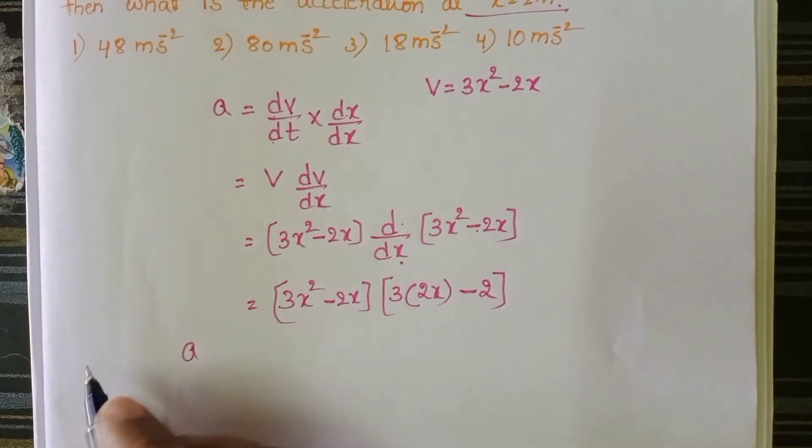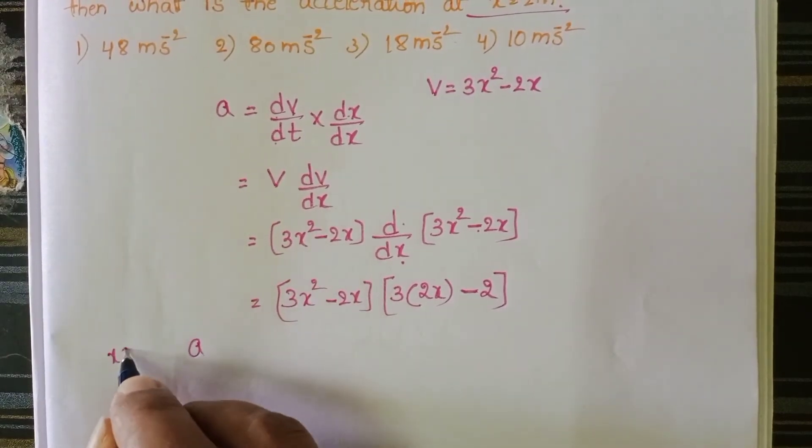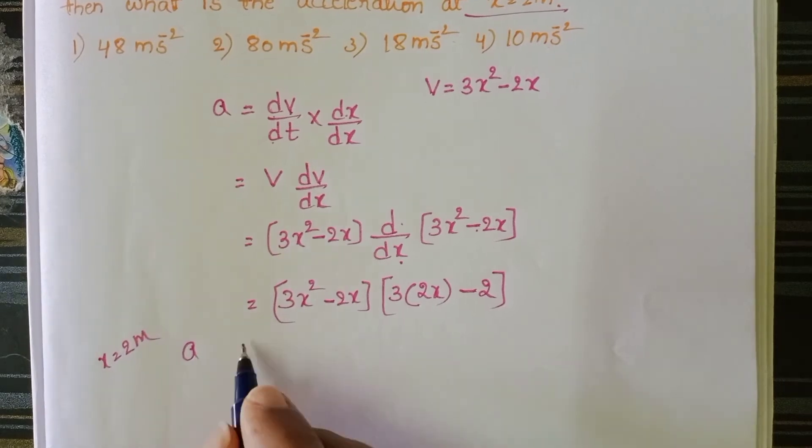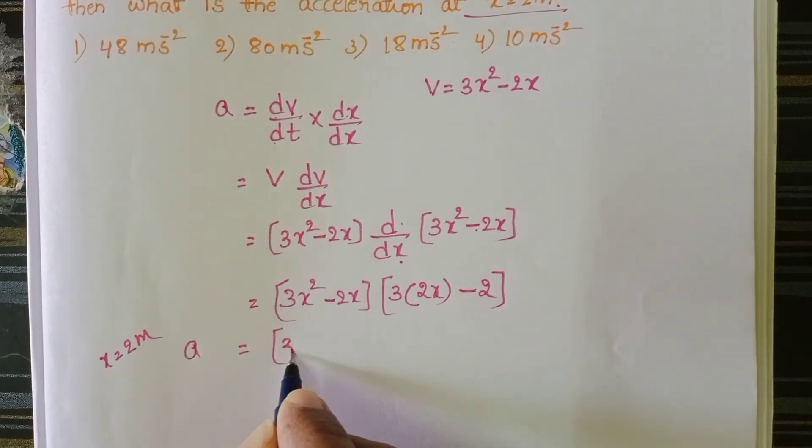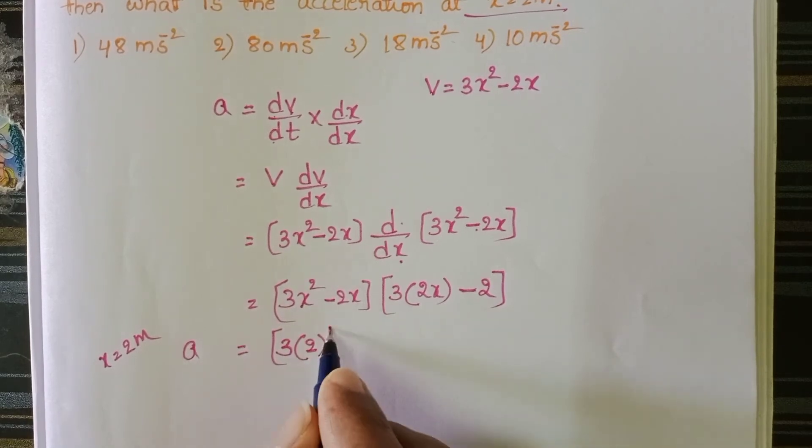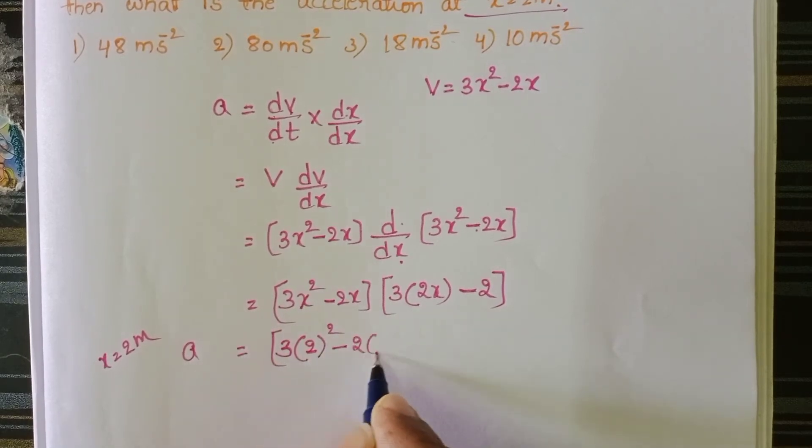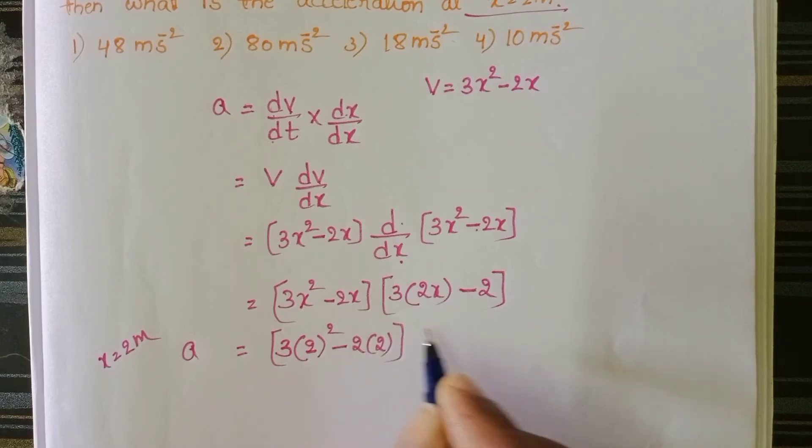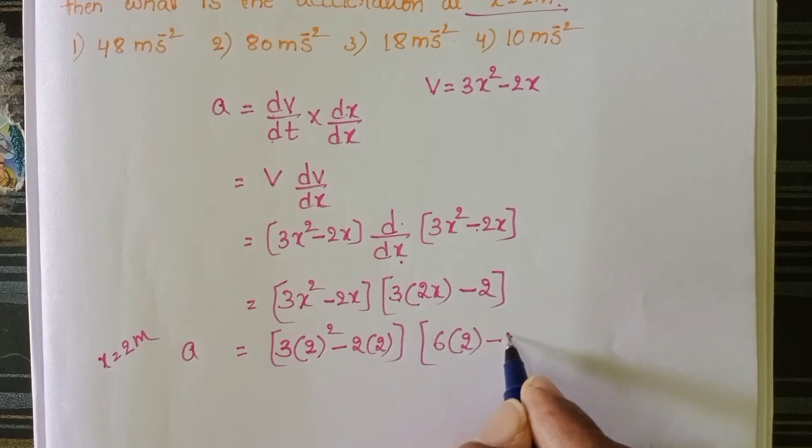Now acceleration at x equals 2 meters we want. Then a equals 3 into, in place of x substitute 2, 2 whole square minus 2 into 2. Here 3 times 2 is 6, 6 into in place of x 2 minus 2.